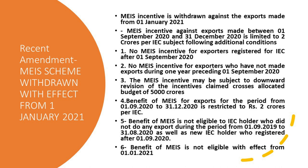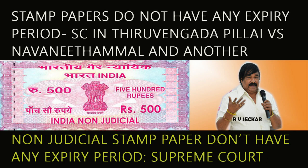The MEIS incentive may be subject to downward revision if the incentives claimed cross the allocated budget of Rs. 5,000 crores — if the government spends more than 5,000 crores, it can revise downwards. Benefit of MEIS for exporters for the period from 1st September 2020 to 31st December 2020 is restricted to Rs. 2 crores per IEC. Benefit of MEIS is not eligible for IEC holders who did not do any export during 1st September 2019 to 31st August 2020, as well as new IEC holders registered after 1st September 2020. MEIS benefit is withdrawn with effect from 1st January 2021.